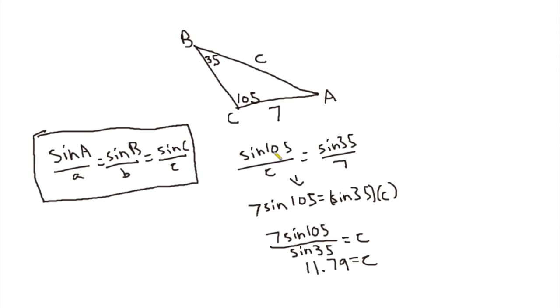So here we have sine of 105, sine of the angle over the side across from it, is equal to the sine of this angle over the side across from that angle. And so here we just apply the law of sines, we plug in our values, and then it's very easy to solve from this point. We just cross multiply. So 7 times sine 105 equals C times sine 35.